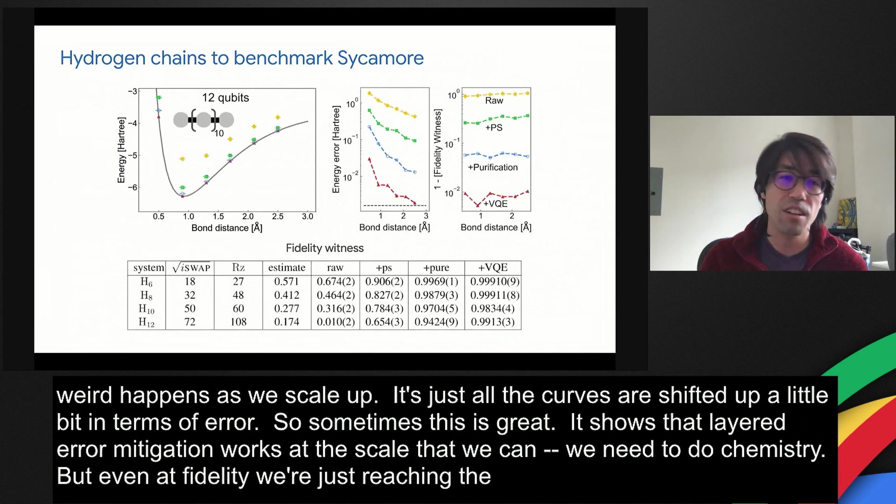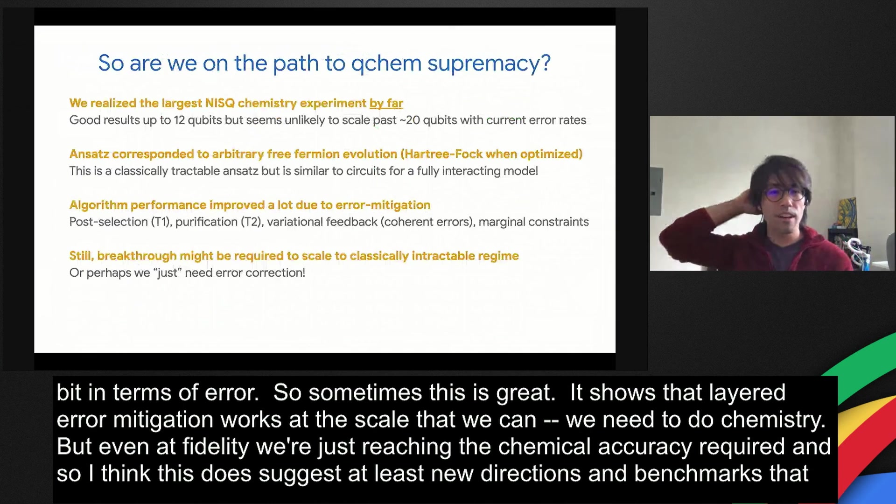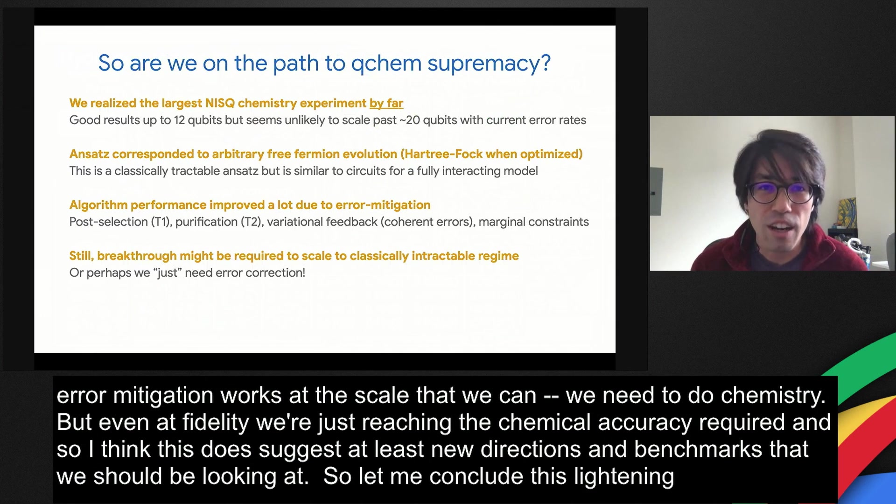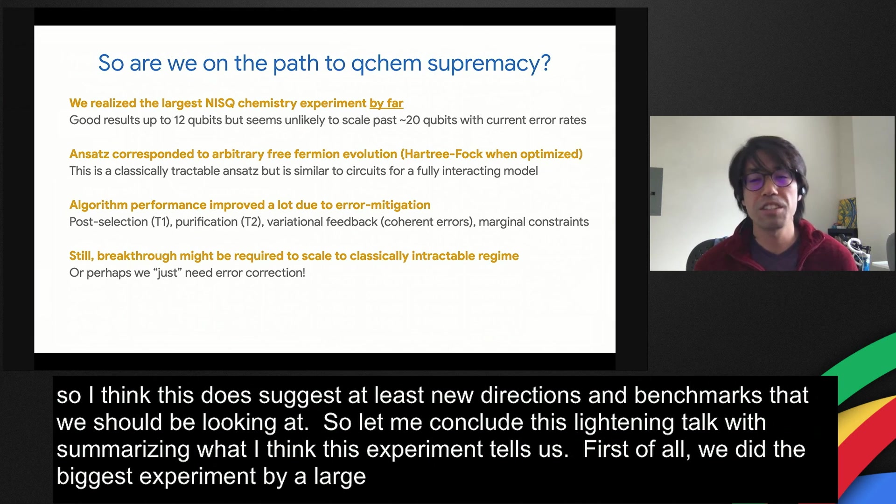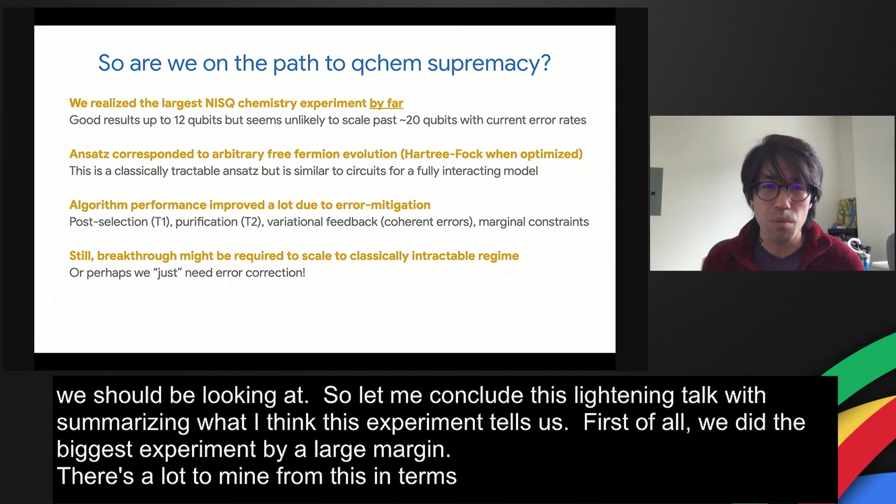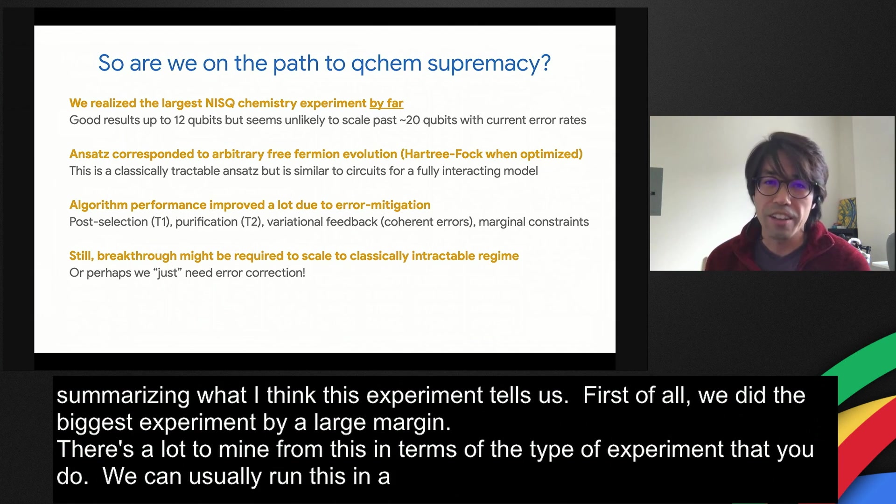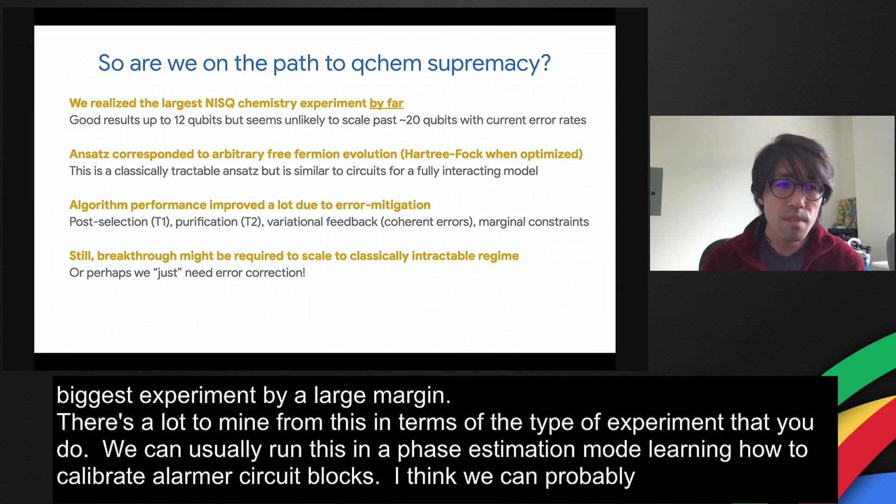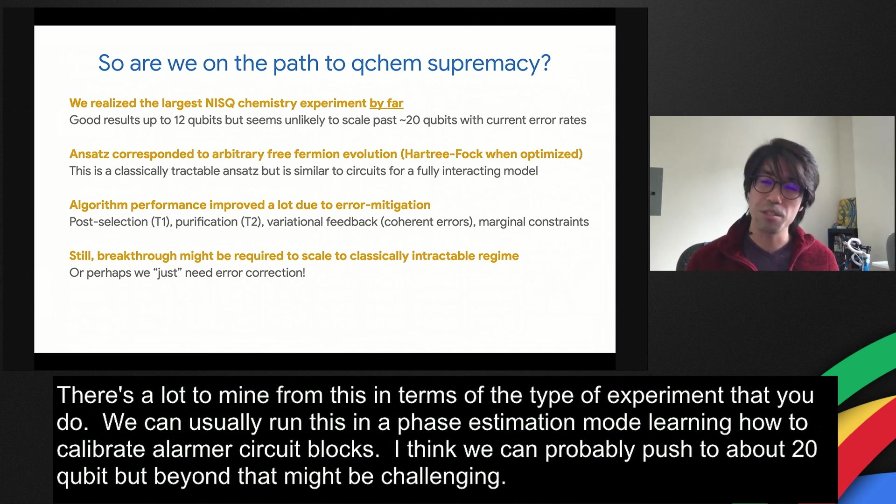But even at two nines of fidelity, we're just reaching the chemical accuracy required. I think this does suggest at least new directions and benchmarks that we should be looking at. Let me conclude this lightning talk with summarizing what I think this experiment tells us. First of all, we did the biggest VQE experiment by a large margin. There's a lot to mine from this in terms of the type of experiment that you do. For example, we ran this in VQE, but you could easily run this in a phase estimation mode or learning how to calibrate these larger circuit blocks. I think with cleverness, we can probably push to about 20 qubits with our current error rates, but going beyond that might be challenging.